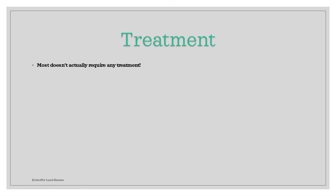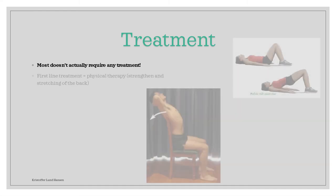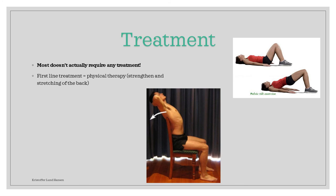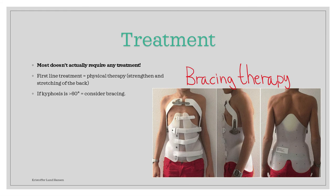Luckily, Morbus Scheuermann is not the end of your life. In fact, most people have so few or mild symptoms that they don't require any treatment at all. The first thing you do, and a common thing to do anyways, is to educate the patients in physical therapy. This involves making the patients perform specific stretching exercises to counteract the kyphosis. If the kyphosis is over 60 degrees, which can be calculated using the Cobb angle, you can always consider using a back brace that you walk around with during the day.